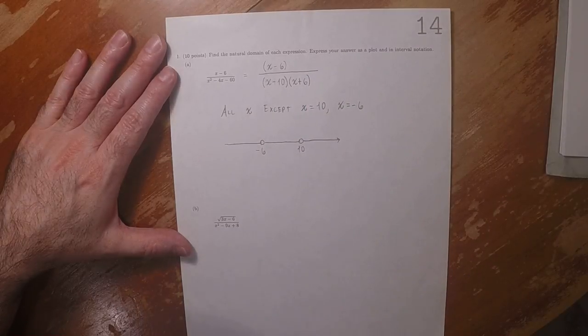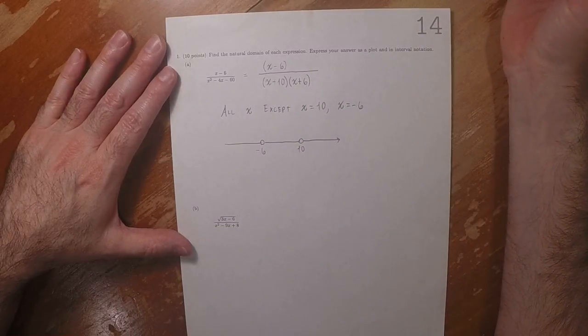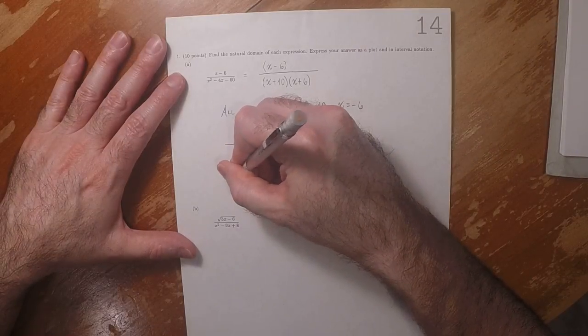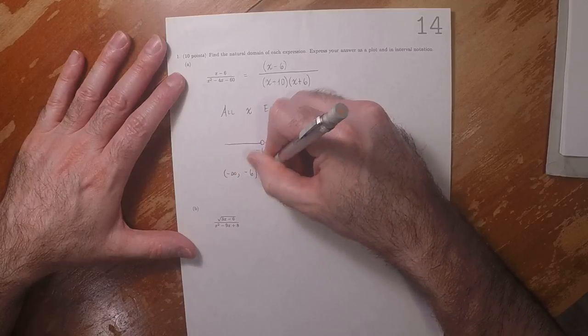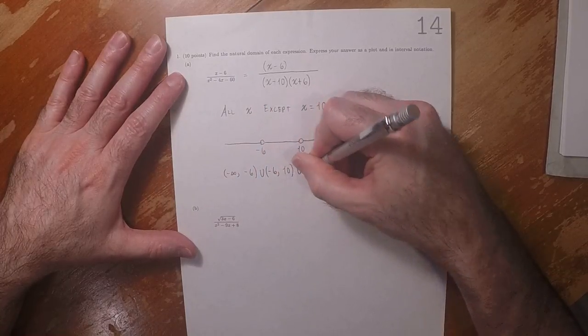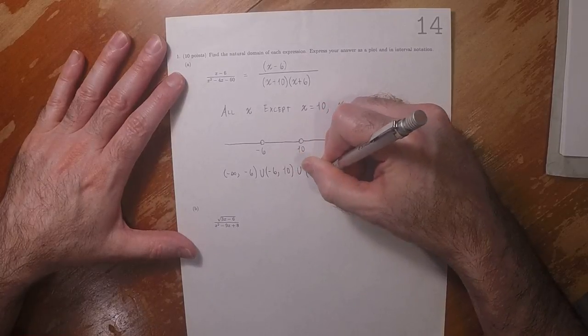That's the plot. And then expressed in interval notation: negative infinity to negative 6, union negative 6 to 10, union 10 to infinity.